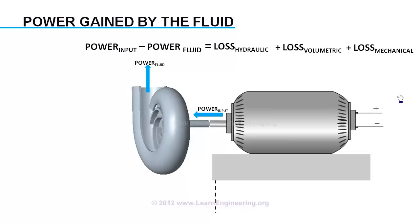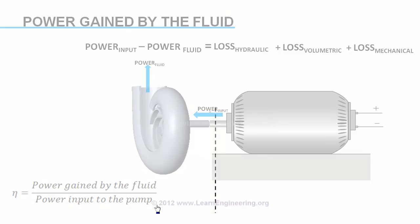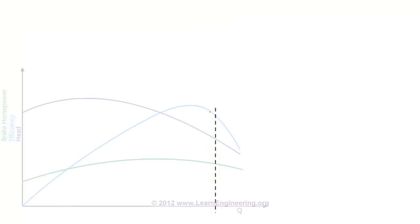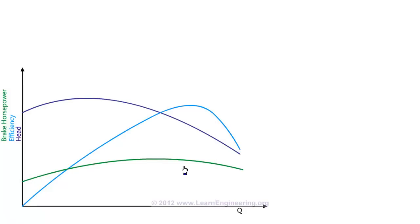So, efficiency of a pump can be defined as power gained by fluid divided by power supplied to the pump. For a typical centrifugal pump, efficiency will vary like this. Corresponding shaft power variation is as follows. You can note that there is an operating point in the pump where efficiency is maximum. It is known as the best efficiency point. It is marked on the head curve here.